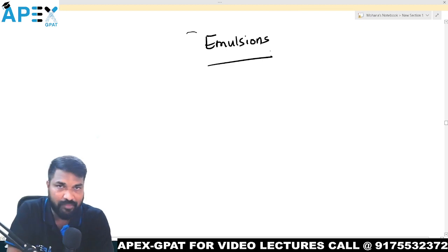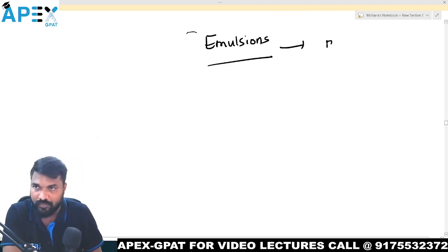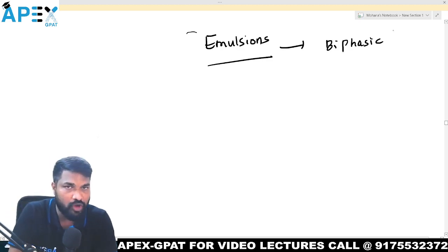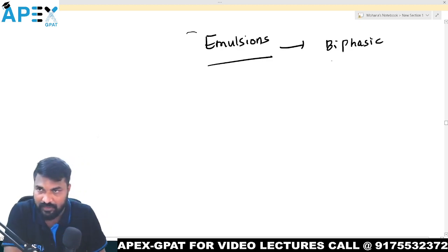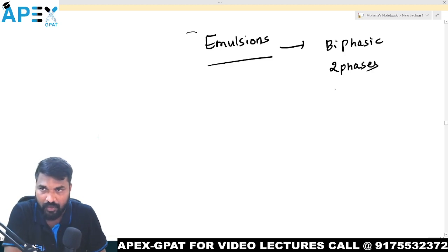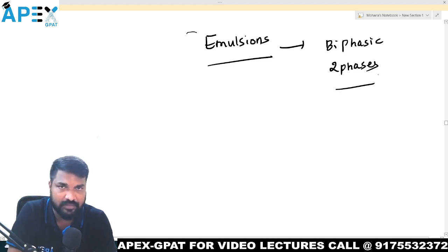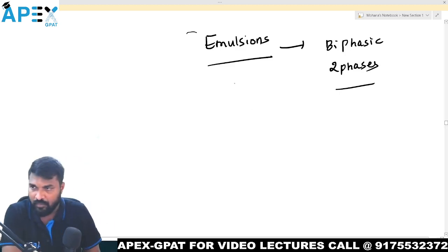You all are aware, emulsions are the biphasic liquid dosage forms. This is the biphasic liquid dosage form. What do you mean by biphasic? We have two phases here. What is the difference between a single phase and two phases?